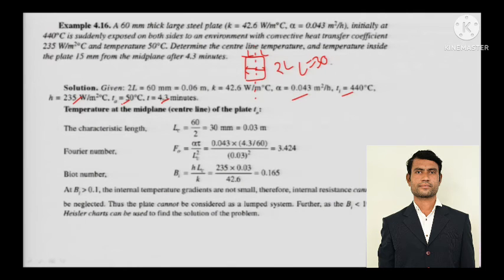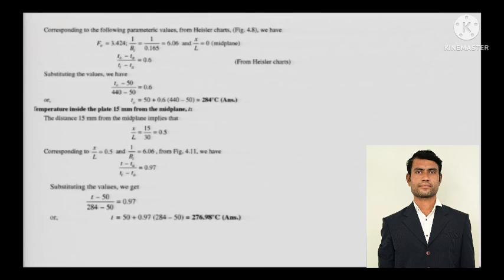A Biot number of 0.165 gives a clear indication that you will not implement lumped parameter analysis — rather, you will implement graphical analysis. At Biot number greater than 0.1, the internal temperature gradients are not small; therefore, internal resistance cannot be neglected, and lumped parameter analysis cannot be applied. Using the Fourier number and 1 by Biot number already calculated, you use the Heisler chart for the mid-plane. By substituting the values, you can calculate To, the centerline temperature.